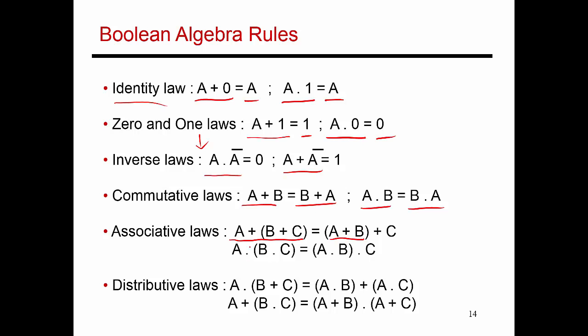Similarly for the AND operator as well. Here's the distributive law, which is very similar to normal linear algebra. A AND'd with B or C is A and B, OR'd with the result of A and C.